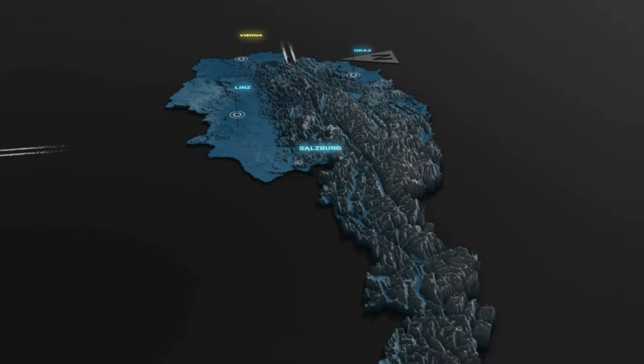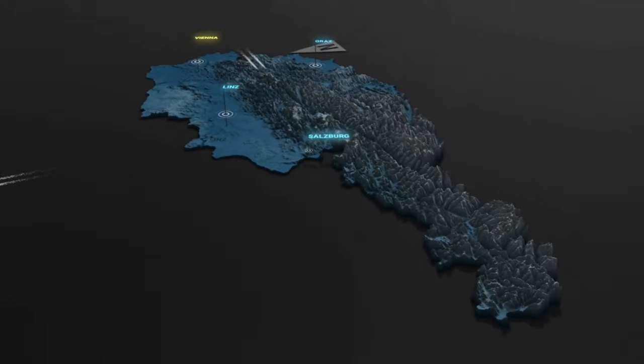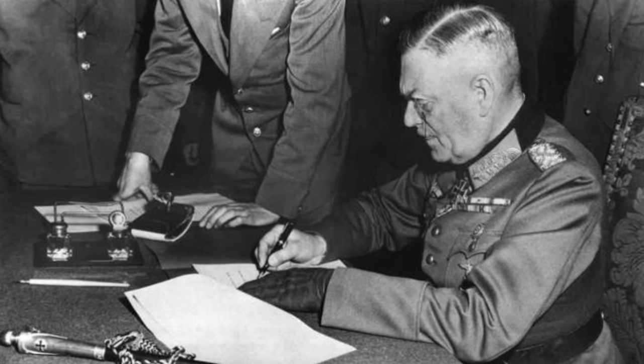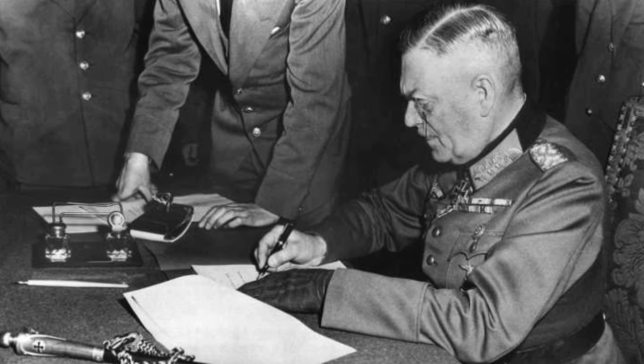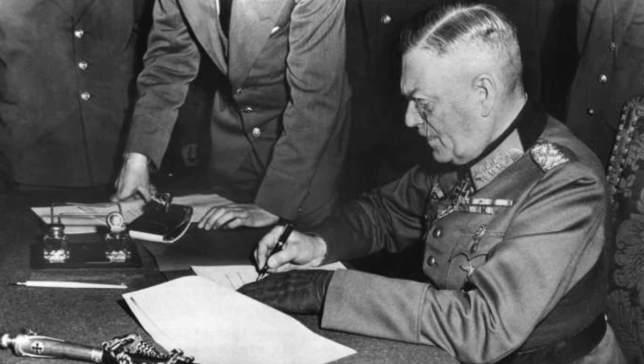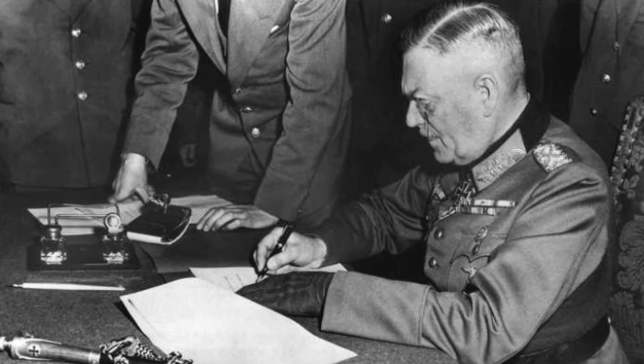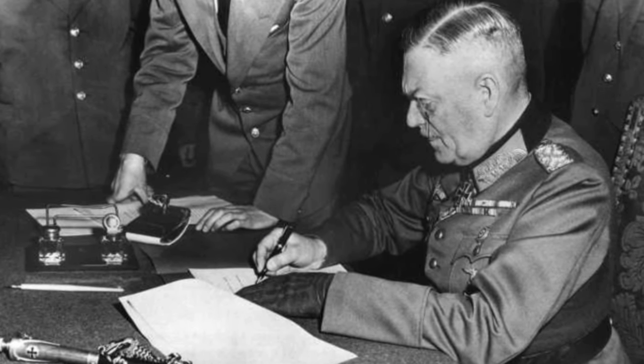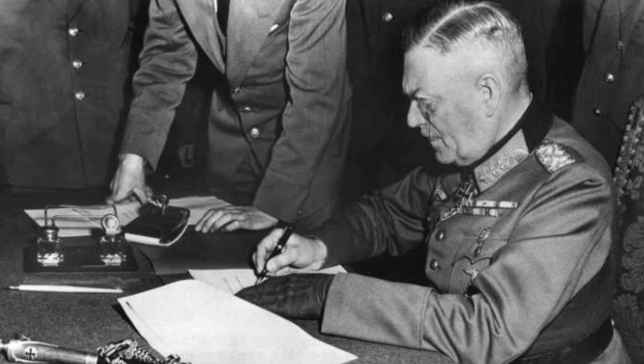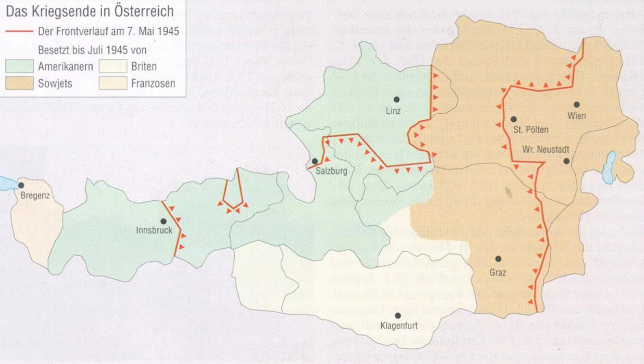We look at all these questions in today's video. The Second World War also ended in Austria with the unconditional surrender of the German Wehrmacht on May 8, 1945.